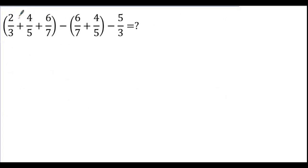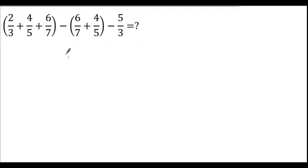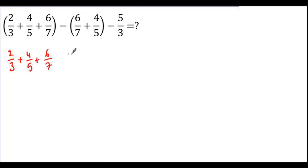Let's go on to the next example. Remember the order of operations — brackets first. But in questions with only addition and subtraction, you may consider distributing the minus. Here we have 6 over 7 and also 6 over 7, so 6 over 7 minus 6 over 7 will give 0. Distributing the minus will make it easier. So let's write: 2 over 3 plus 4 over 5 plus 6 over 7, and distribute minus: minus 6 over 7, minus 4 over 5, and minus 5 over 3.